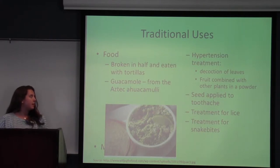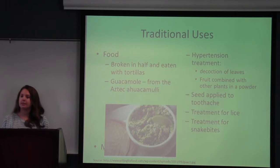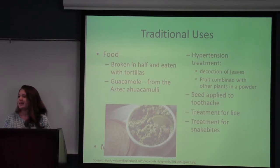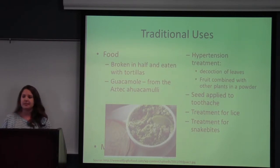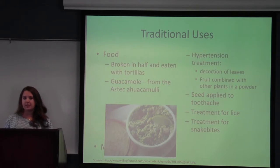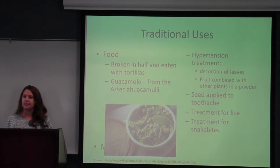Some ways that avocado is eaten: it can be broken in half and eaten with just a little salt and tortillas as breakfast. Another common way we see it consumed is as guacamole, which is when the flesh is mashed up and combined with other ingredients including onions, garlic, tomatoes, and usually a little lime or lemon juice.